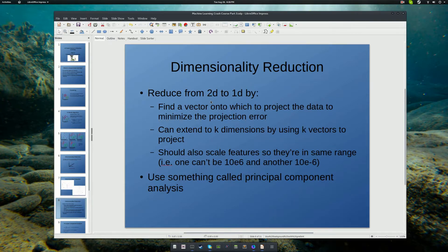So, the way you do this is by finding a vector onto which to project the data to minimize the error of that projection. And you can extend that to k dimensions by using k vectors to project. And it's important to note that you should also scale these features so that they're in the same approximate order of magnitude. You wouldn't want to do this on data where some of the points are on the order of millions and other points are on the order of 10 to the minus 6.